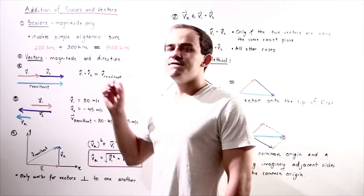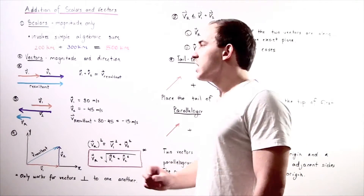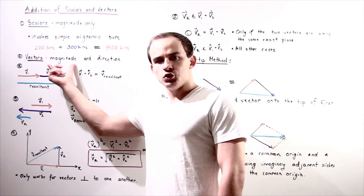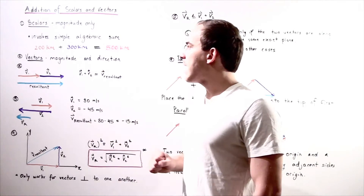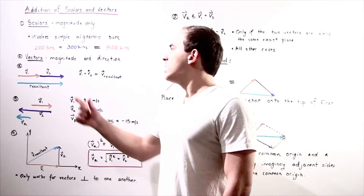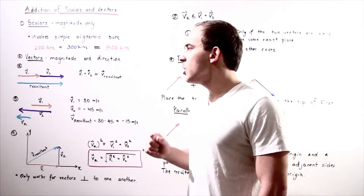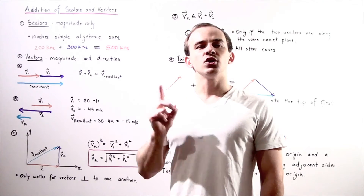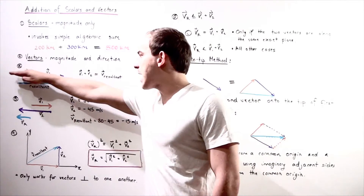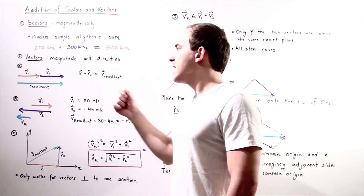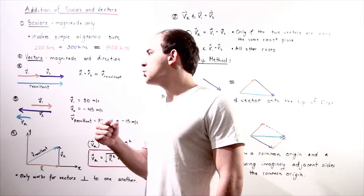Now let's look at vectors. Vectors are more complicated because they not only have magnitude but also direction. So we have different cases for our addition of vectors. Let's suppose our two vectors, v1 and v2, point in the same exact direction along the same exact axis — let's say the x-axis. Here we have velocity vector 1 and velocity vector 2.